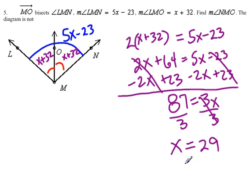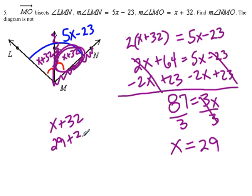But it just didn't want x, it wanted us to find the measure of NMO. So it wants us to find this measure. Notice we've already said it's x plus 32, so x plus 32. And we know x is 29, so 29 plus 32. If we combine, we get 61 degrees.